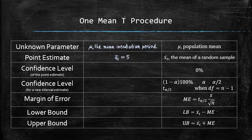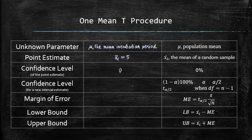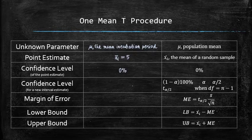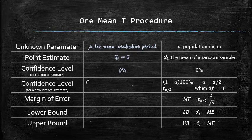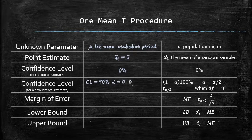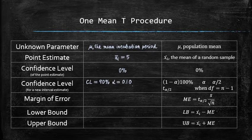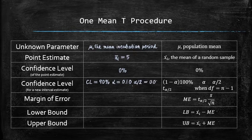How confident are we that the point estimate is equal to exactly the unknown parameter? We have 0% confidence in that. So the new confidence level that we have set up is 90%. So we have to choose the alpha equal to 0.1. So that alpha over 2 is equal to 0.05.